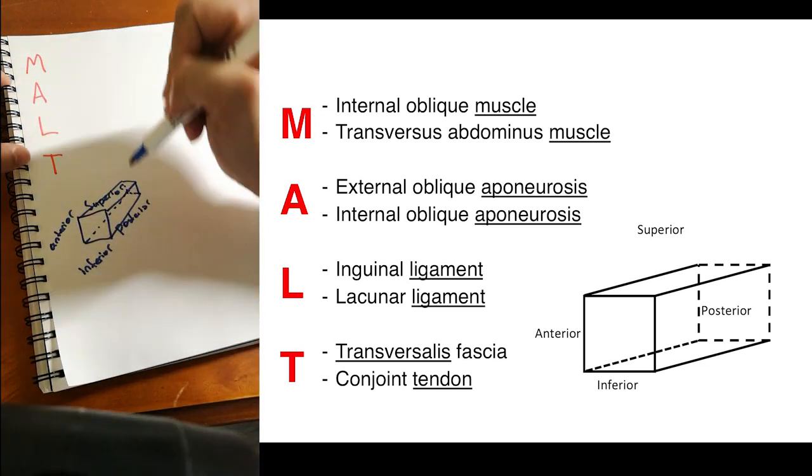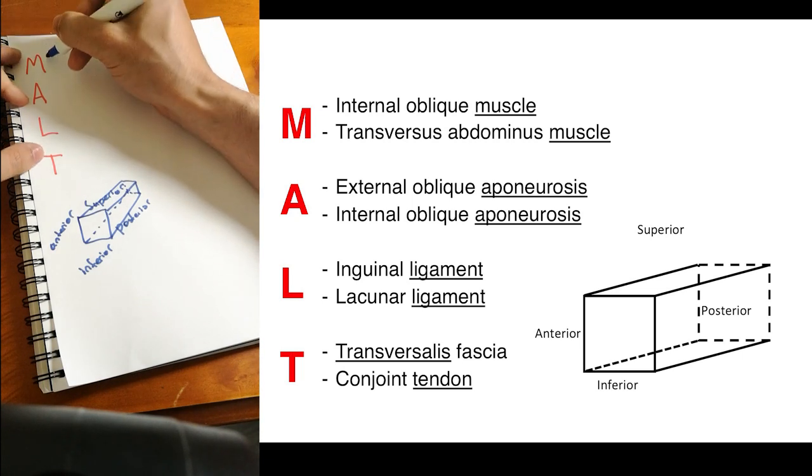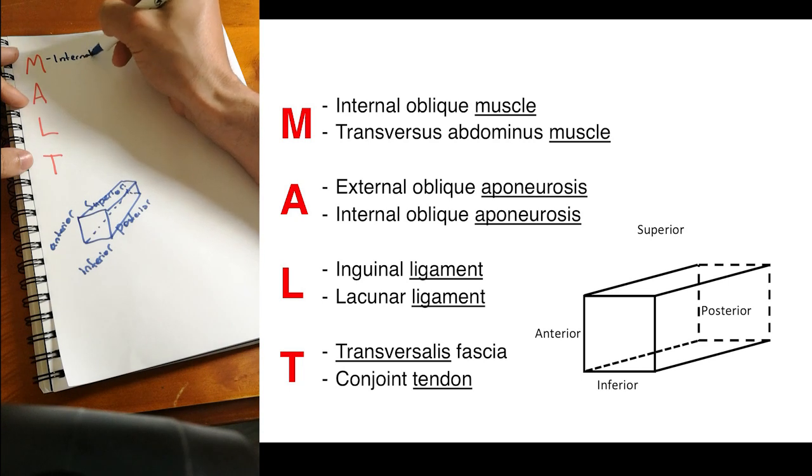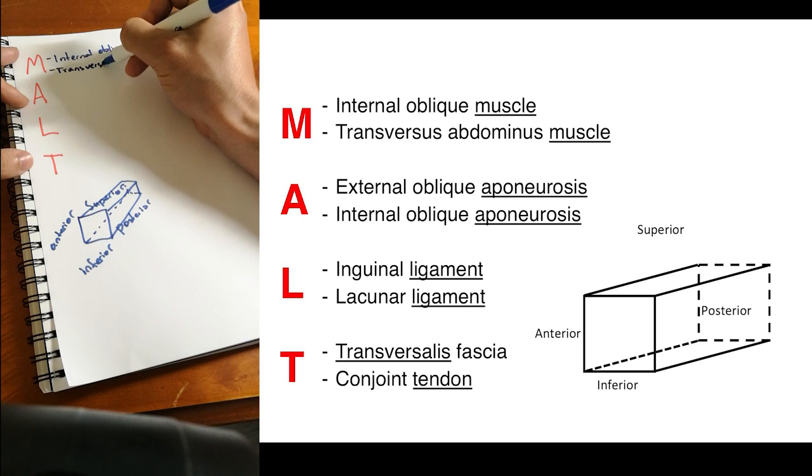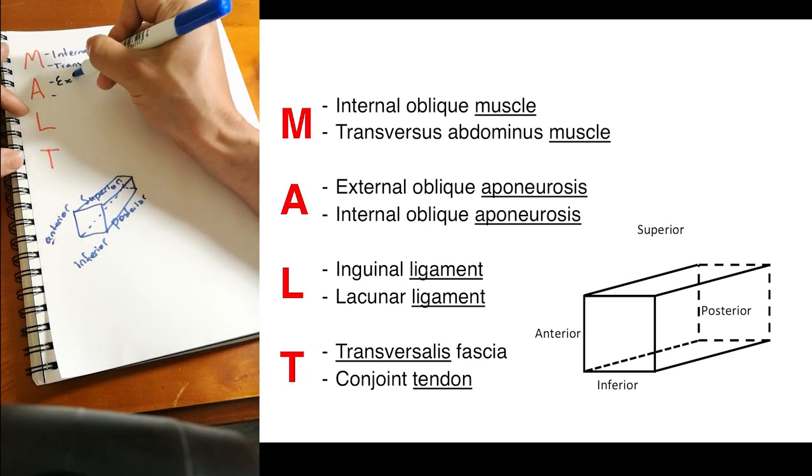There are two muscles in the superior border. So those two muscles are the internal oblique muscle and the transversus abdominis muscle. The A structures are in the anterior position.